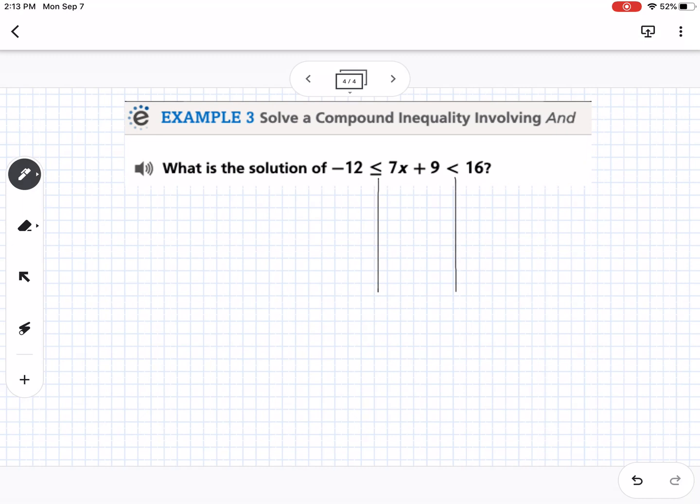So we're trying to get x alone in the middle. So you can focus on the 7x plus 9 and we want to turn that into just x. So if we use our rules of algebra, the first thing we could do is subtract 9 from all three parts. So if we subtract 9, so negative 12 minus 9 turns into negative 21 is less than or equal to, now we just have 7x because that cancelled, is less than 7.